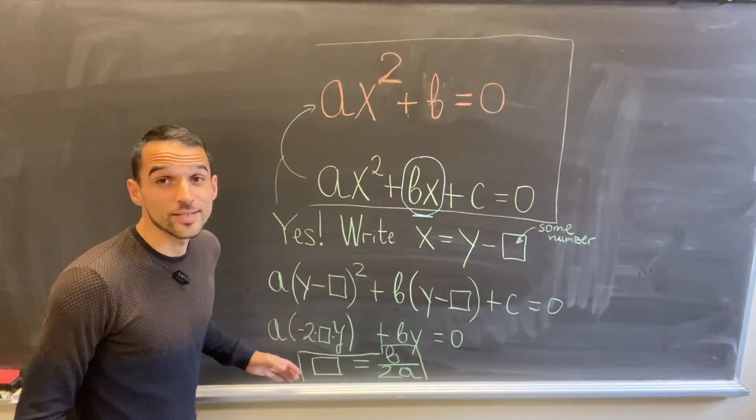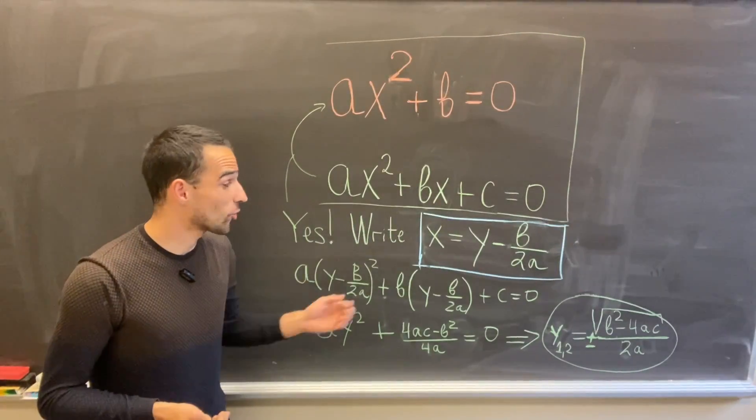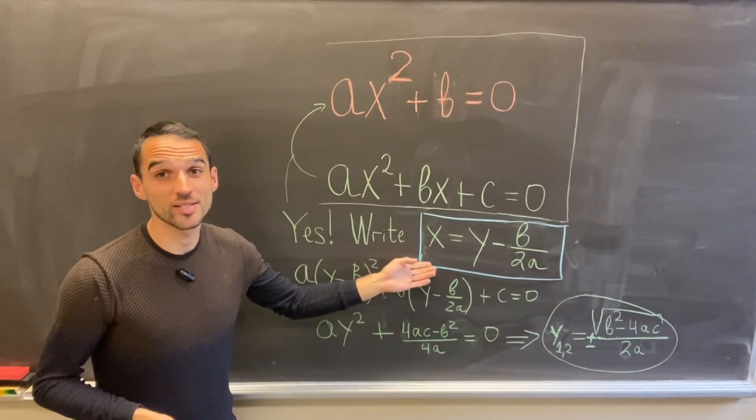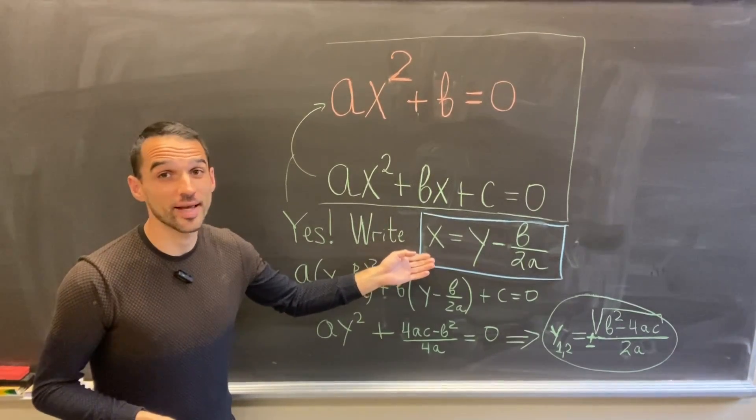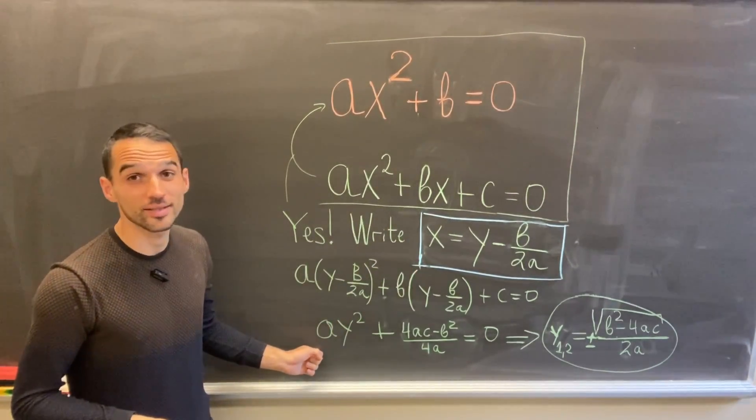Then the square must be b over 2a. Now I am done because I know that if I write y - b/2a instead of x and after I simplify, I will get a depressed quadratic.